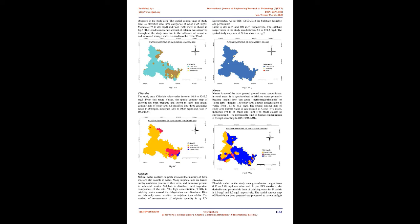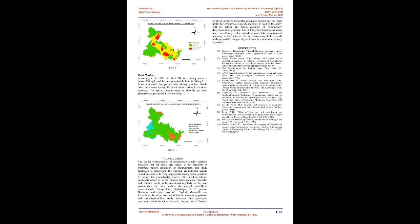The spatial contour map of chloride (Cl) for the study area is classified into three categories: good (below 250 mg/L), moderate (250 to 1000 mg/L), and poor (above 1000 mg/L). Nitrate: Nitrate is one of the most common groundwater contaminants in rural areas. It is monitored in drinking water primarily because surplus levels can cause methemoglobinemia, or blue baby disease. The study area nitrate concentration varies from 18.9 to 41.5 mg/L. The spatial contour map of nitrate is categorized as good (below 40 mg/L), moderate (40 to 45 mg/L), and poor (greater than 45 mg/L), as shown in Fig. 8. The permissible limit of nitrate concentration is 45 mg/L according to BIS 10500:2012.